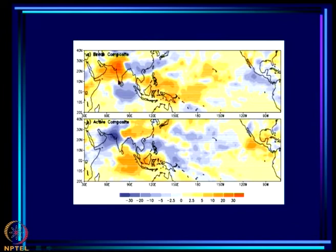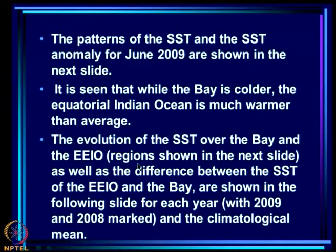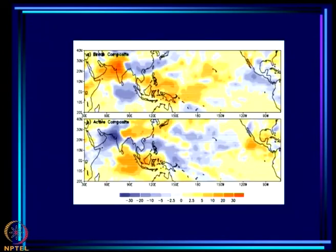On the intra-seasonal scale, during break composites the biggest signal is a flare-up of convection over the eastern and central equatorial Indian Ocean, while during active phases convection there is suppressed. So the competition between convection over the bay and the monsoon zone is with the eastern equatorial Indian Ocean, not the western part — the western part is in fact favorable for the monsoon.